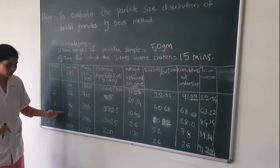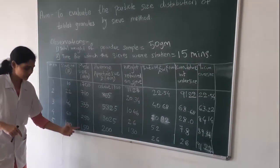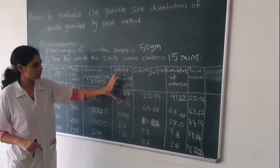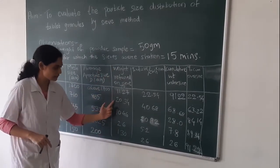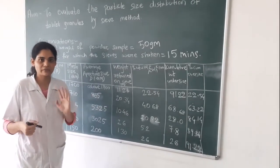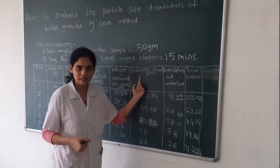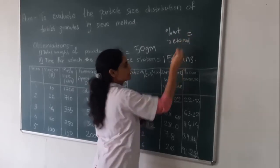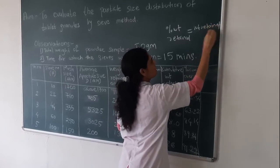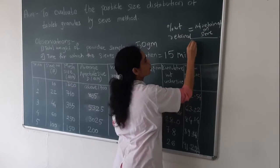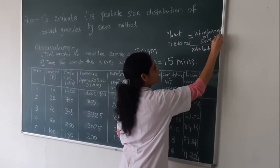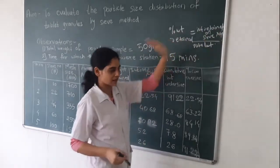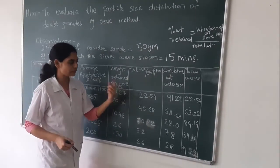We have taken sieves 10, 22, 44, and 16 — the mesh numbers and aperture sizes are written in their respective columns. For the weight retained column, we removed each sieve and weighed the retained material. Percent weight retained is calculated as: weight retained on sieve divided by total weight, multiplied by 100. For example, dividing 11.27 by 50 and multiplying by 100 gives the percent weight retained value. Similarly, all values are calculated for each sieve.